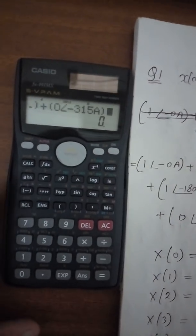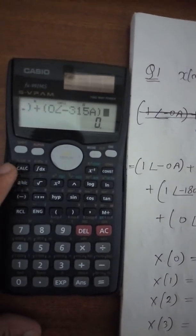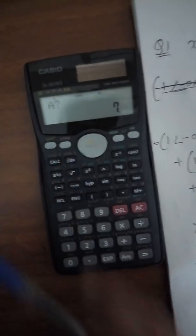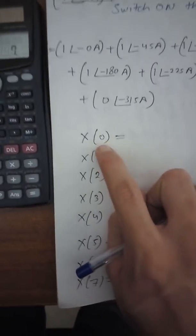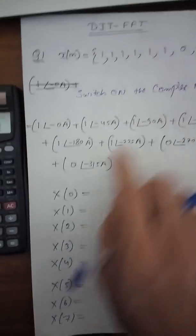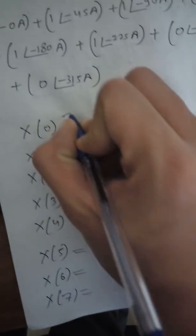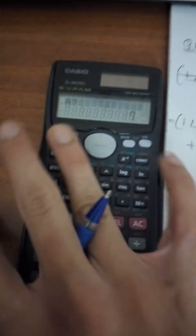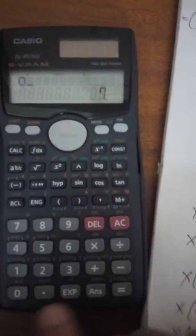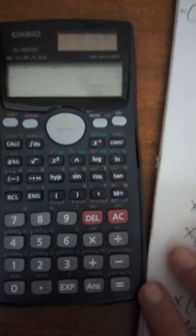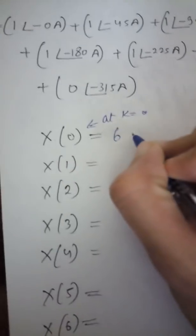Now don't press equals — instead press the Calc button. It will ask for the value of A. We are calculating X(0), which is the DFT at k equals 0. Enter A equals 0, then press equals. You will get the answer 6.